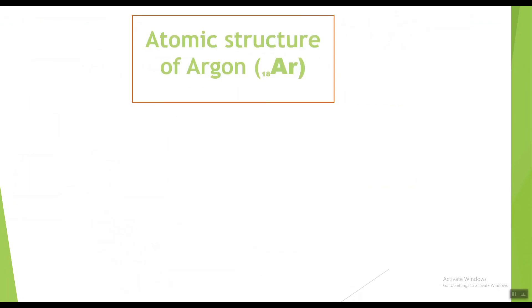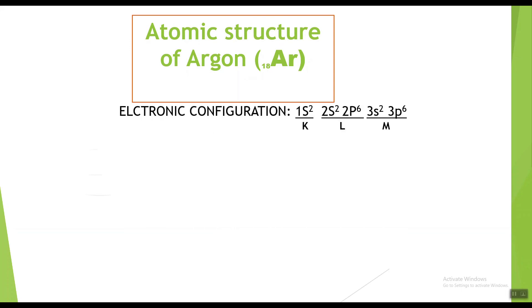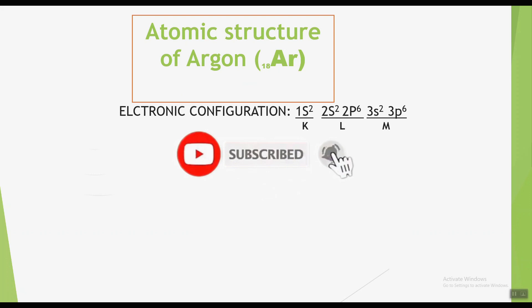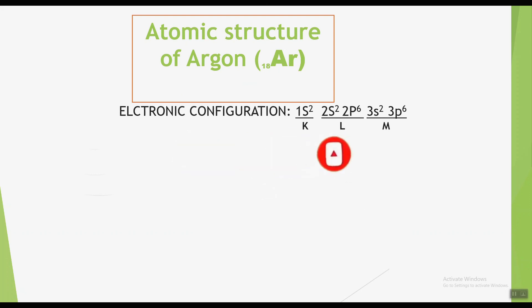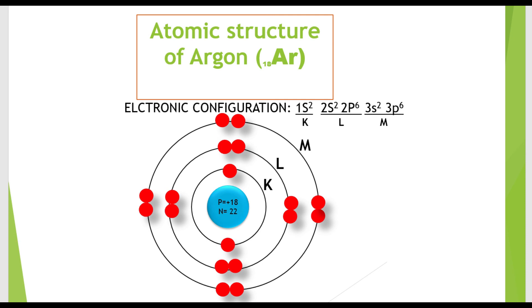Now argon. The symbol for argon is Ar with atomic number 18, showing it has eighteen electrons. The electronic configuration of argon is 1s2 2s2 2p6 3s2 3p6, showing two electrons in the K shell, eight electrons in the L shell, and eight electrons in the M shell. The atomic structure of argon shows eighteen protons and twenty-two neutrons in the nucleus, with eighteen electrons around the nucleus: two in the K shell, eight in the L shell, and eight in the M shell.